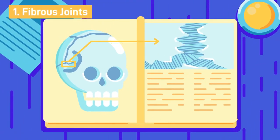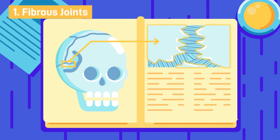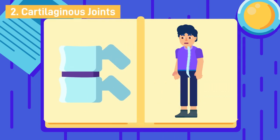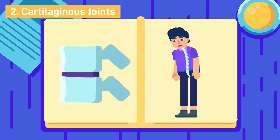Fibrous joints, which contain fibrous tissues and permit very little to no movement. Cartilaginous joints, which have cartilage in between articulating bones and enable minimal movement.